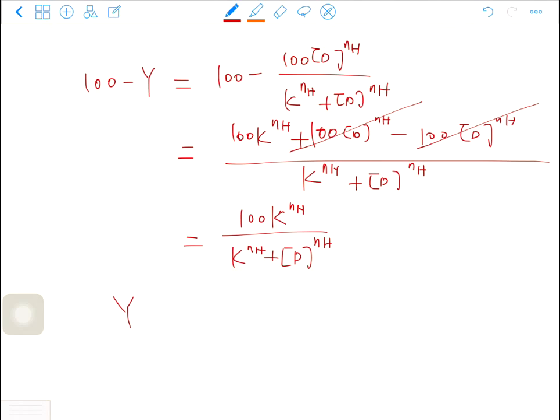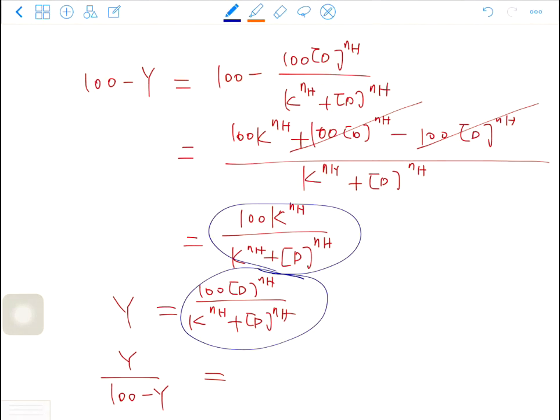So what is y? Y is 100 d^nH over k^nH plus d^nH. So what is y over 100 minus y? So it is this term divided by this term. These two terms have the same denominators, so you have 100 d^nH over 100 k^nH, which is d^nH over k^nH.